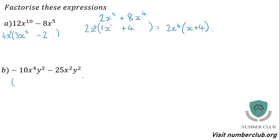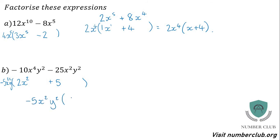For this next question, both signs are negative, so you need to factor out that minus and put a plus inside the bracket. The negative outside will multiply each term to create the negatives inside. You only factor out the sign if they're both negative; otherwise leave it as it is. Highest common factor of 10 and 25 is 5. 5s into 10 go twice; 5s into 25 go 5 times. Lowest power of x is x squared; factor that out. 4 take away 2 is 2, and 2 take away 2 is nothing. Both y terms are y squared, so factor out y squared, and 2 take away 2 is nothing each time. Tidy up to get negative 5x²y²(2x² plus 5).